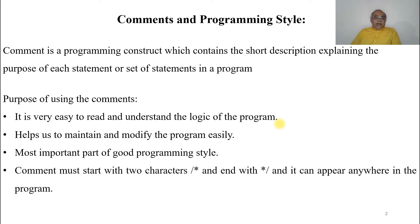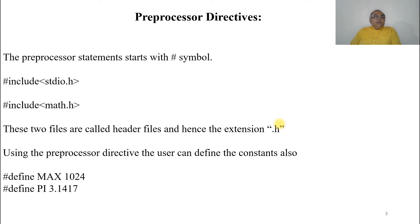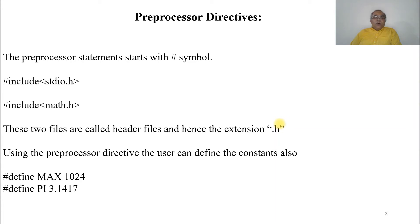The next section is preprocessor directives. Preprocessor statements start with the hash symbol — for example, #include <stdio.h> and #include <math.h>. Since they have a .h extension, these are obviously header files. Using preprocessor directives, the user can also define constants, like #define MAX 1024.